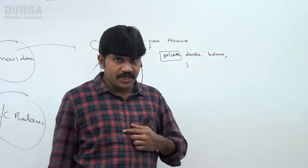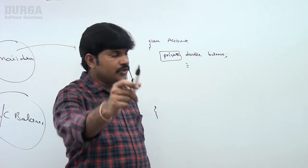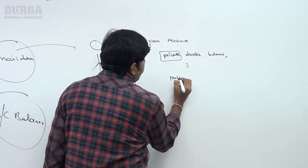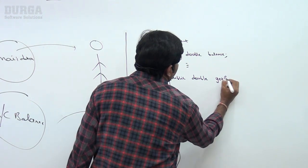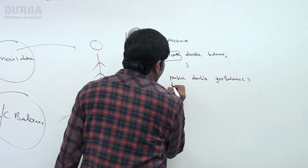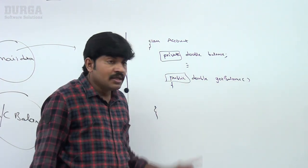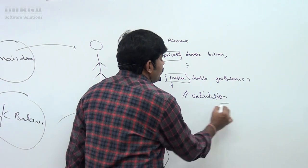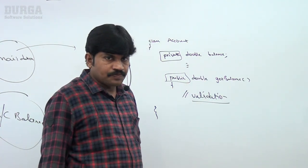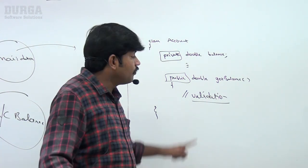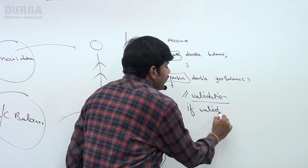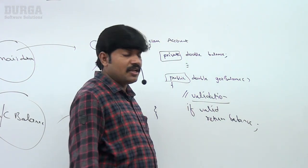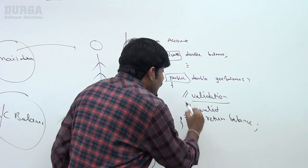If you want to know your balance information, you cannot access the balance variable directly. You will call the `getBalance()` method. Make `getBalance()` public so any person can call it. Inside that method, perform the required validation — provide username and password. If valid, return the balance; if not valid, return 'Sorry, you are not allowed to access this information.'